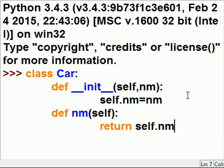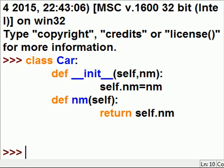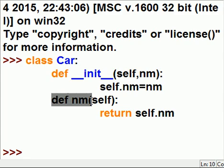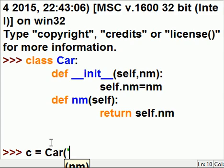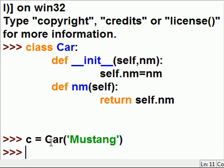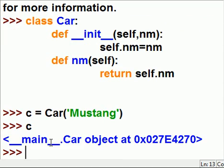Now when I instantiate the Car class into some variable, that variable is referred to as an object variable, and I can run this method off of it. So let's do it: c is equal to Car, and I'm going to pass it Mustang. Boom, it's done. What is c? c is a Car object.